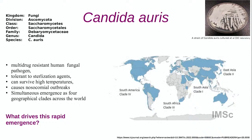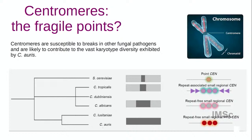Centromeres are a functional part of chromosomes. In this picture you see a chromosome. The general picture that comes to mind is the X shape, and the constriction that you see — that's what is called a centromere. During cell division, it is the last point of contact between two sister chromatids. Previous studies in related fungal species have revealed that regions in and around the centromeres happen to be the hotspots for karyotypic alterations. So we focused on centromeres.